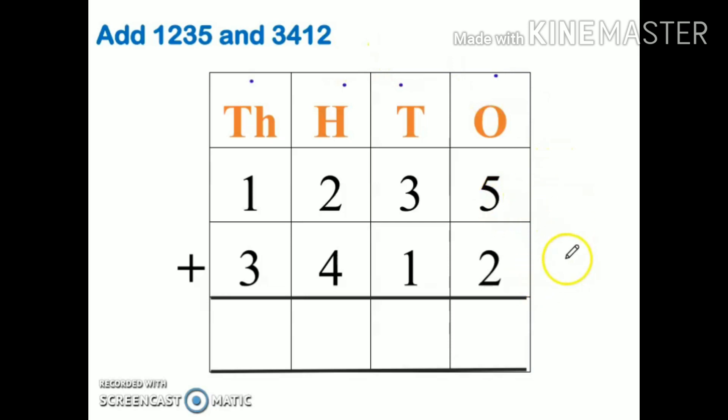Always remember in addition I can write both the numbers in any order. Second rule - don't forget to put the plus sign. Also mention the places: ones, tens, hundreds, and thousands.